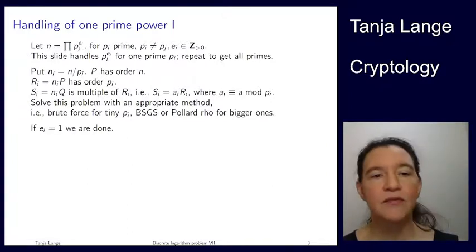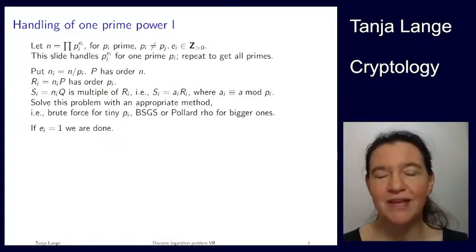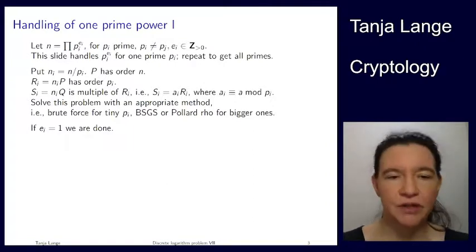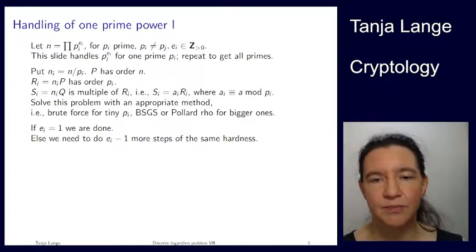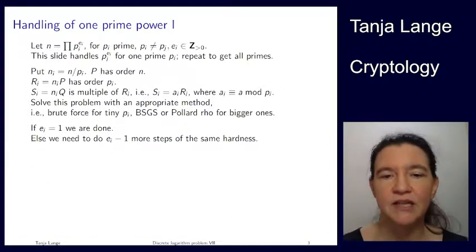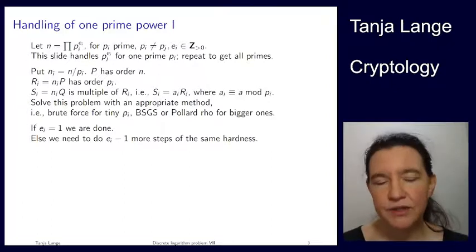All right, so then if ei, the exponent was just 1, we're done. What are we even talking about? We have gotten all the information for that pi we can get. We move on to the next prime. Now, if it's 2, and that's the example we've been seeing on the previous lecture, so we had a 53 squared, well, we have to do one more step.